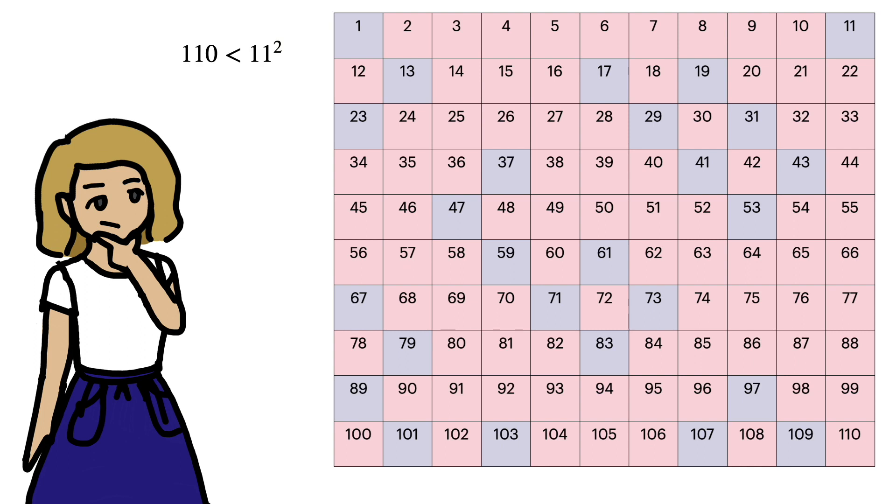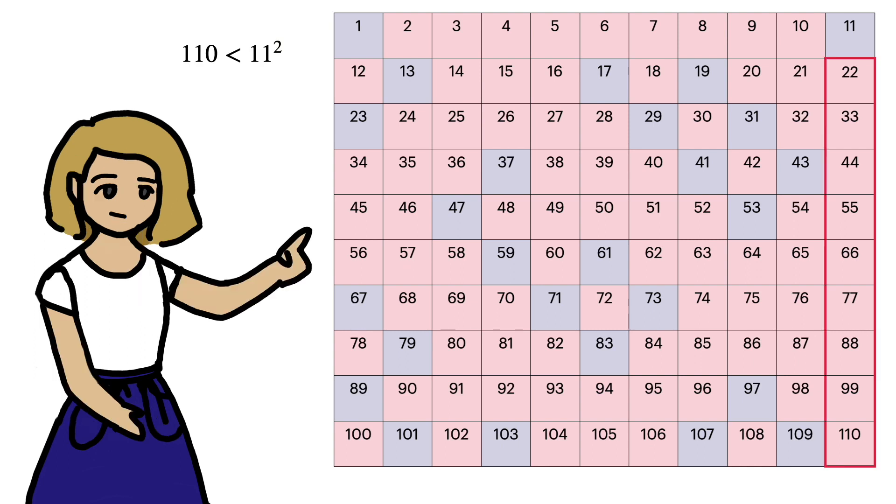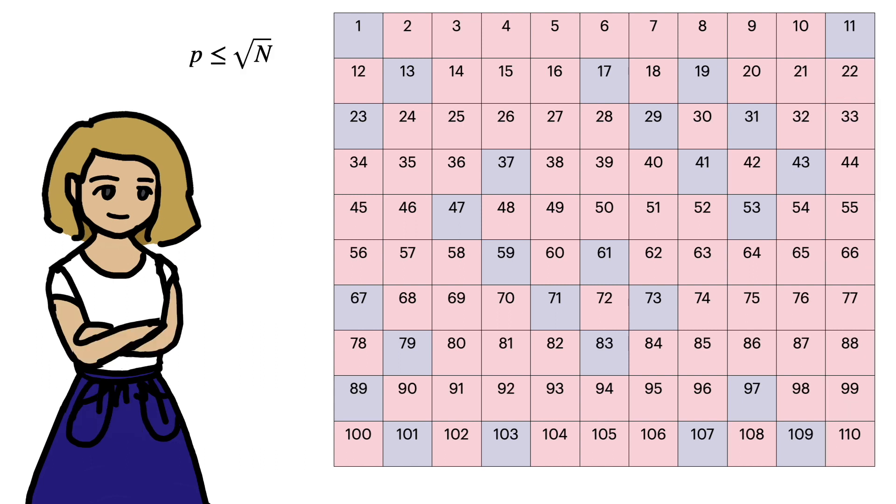and multiples of 7. Now, because n is less than 11 squared, all the multiples of 11 that are below n are also multiples of 2, or 3, or 5, or 7. Generally, we only have to remove multiples of primes that are less than or equal to the square root of n.